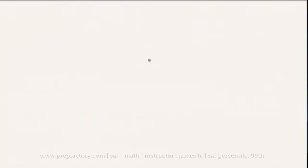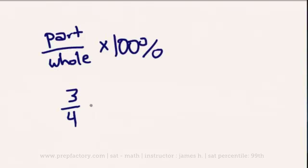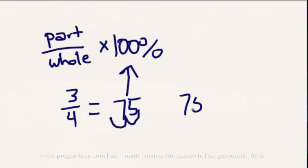Let's move into percents. The most important thing to remember about percents is that they are really just fractions in a different form. The formula is: part over whole, times 100%. The easiest way to find percents is to divide a part by a whole, which gives you a decimal, then move the decimal point two places to the right. For example, 3/4 in your calculator gives 0.75, which equals 75%.